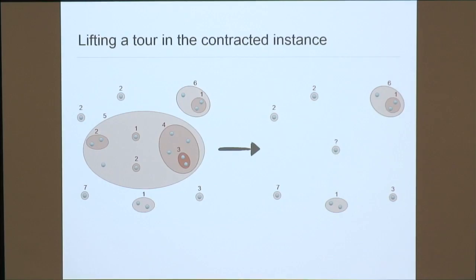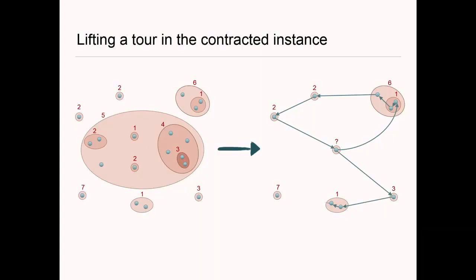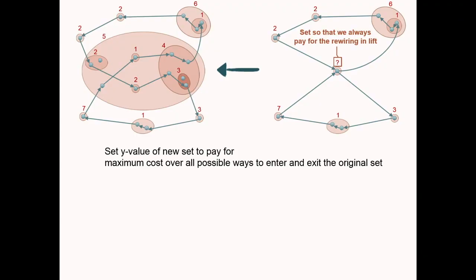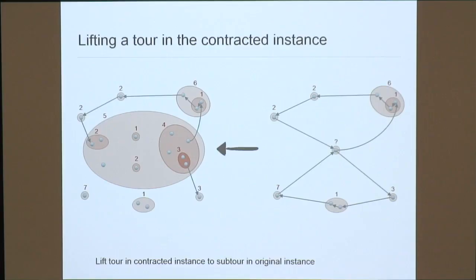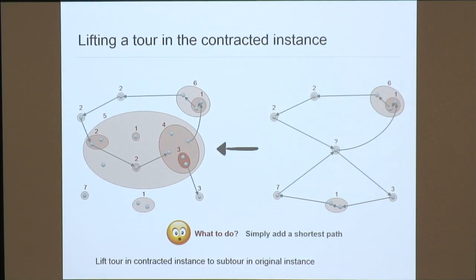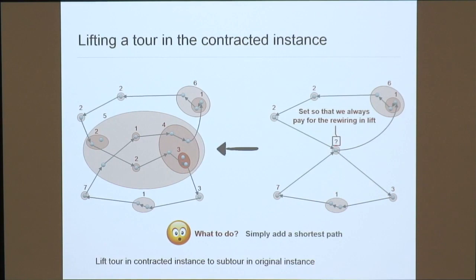After contracting a set S and finding a tour on the smaller instance, we lift by copying edges and inserting paths through S. The issue is we don't know which entry vertex maps to which exit vertex, so we take the maximum over all possible entry/exit pairs — setting the new y-value to be the worst-case shortest path cost inside S. This ensures the contraction does not increase the LP value, and by design the lift costs no more than the tour in the contracted instance.